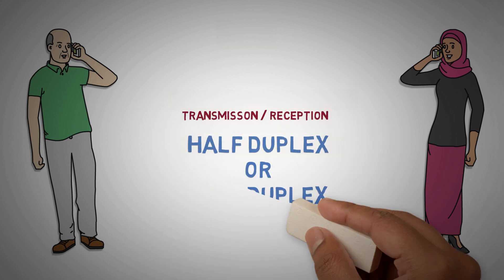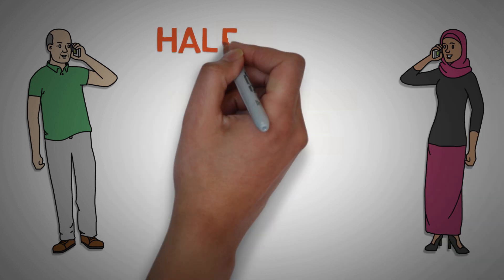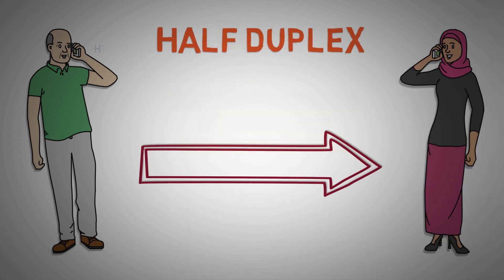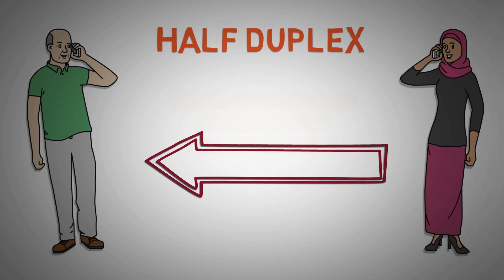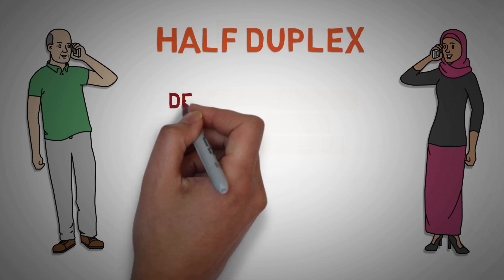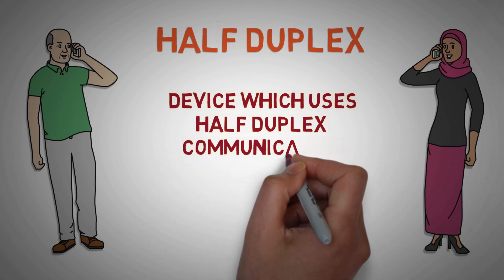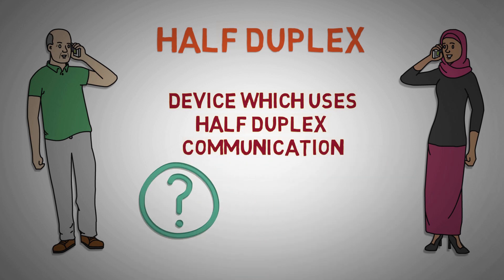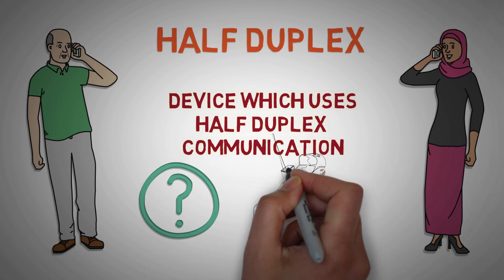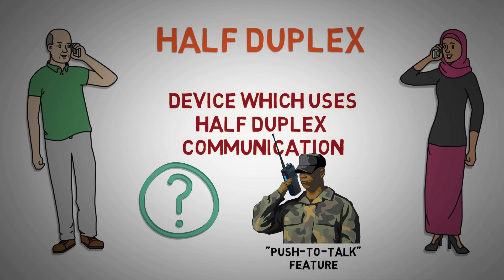Duplexing can be half duplex or full duplex. Half duplex stands for one-way communication at a time, which means the other party has to listen when you're talking and you have to listen when the other party is talking. A device that uses half duplex communication is a walkie-talkie, which has a push-to-talk feature.